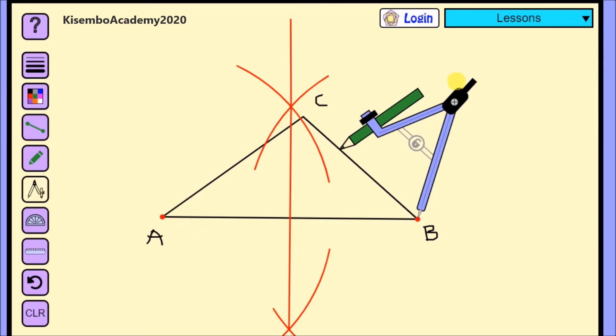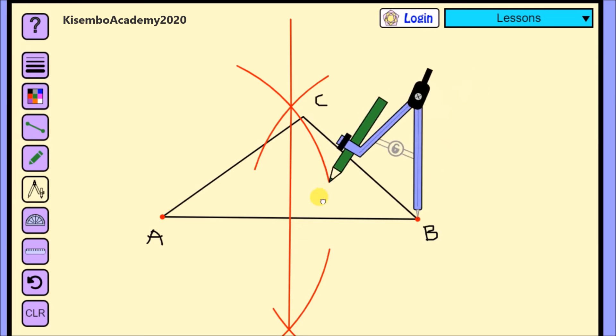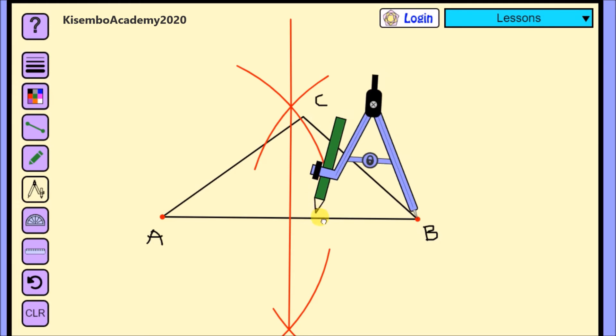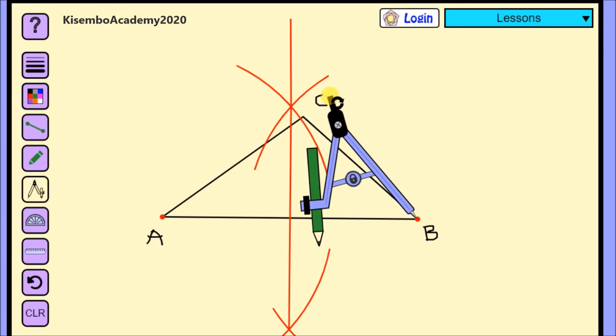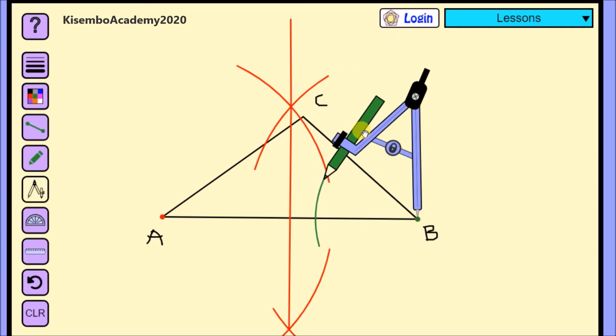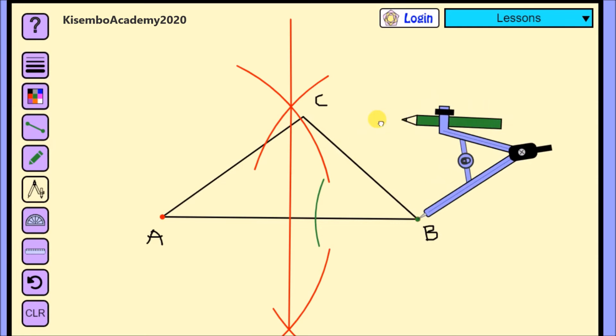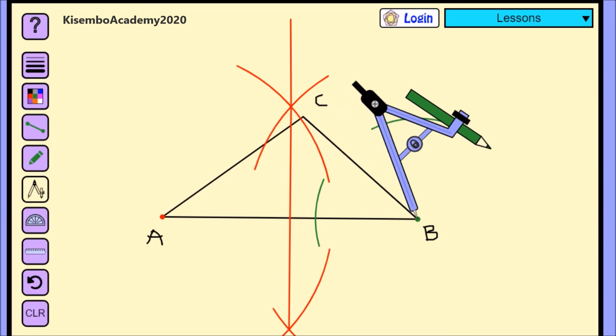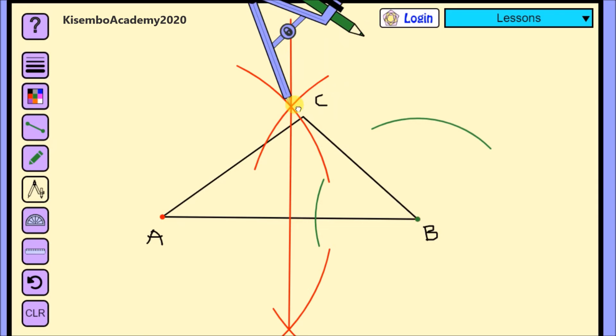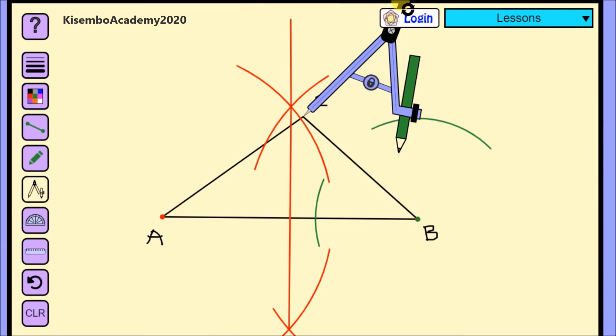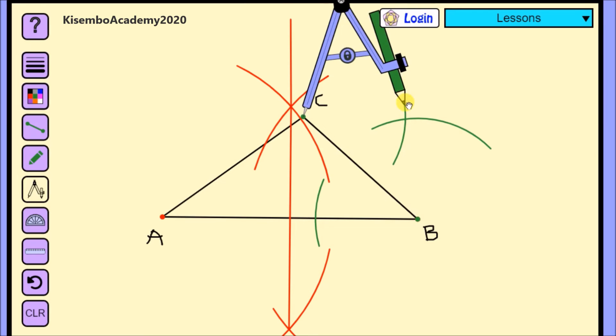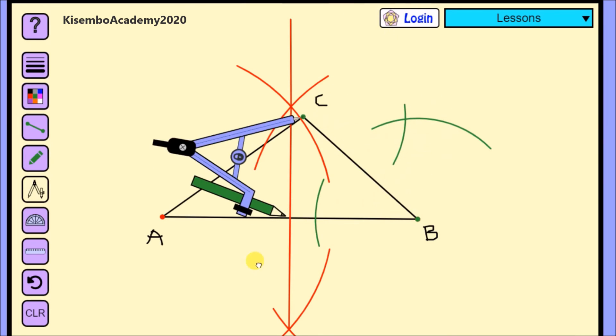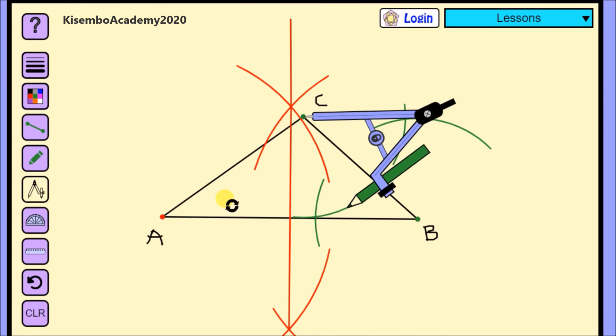Still, I'm going to get my compass. Put my compass needle at point B. Draw an arc on either side of line BC. Then I'll get my compass needle again. Just like I had done before. And draw the arcs. And then I'll draw the line.